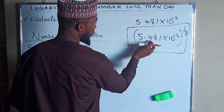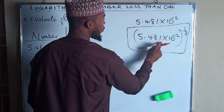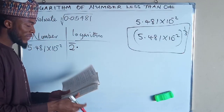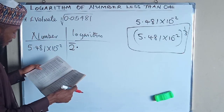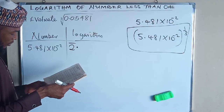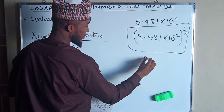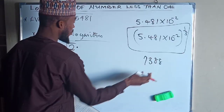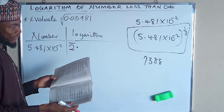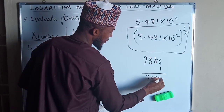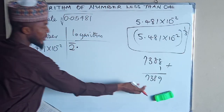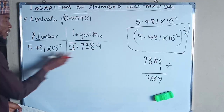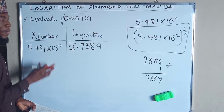The mantissa is found under the log table, and the numbers we use are 5.481. So we are going to look at 54 under 8, difference of 1. Under my table, 54 under 8 gives 7, 3, 8, 8. Then you look for the difference of 1 — whatever you get, you add it to this number. The difference of 1 is 1, so you add 1, which gives 7, 3, 8, 9. You bring the number 7389 here — so this is the logarithm of this number.